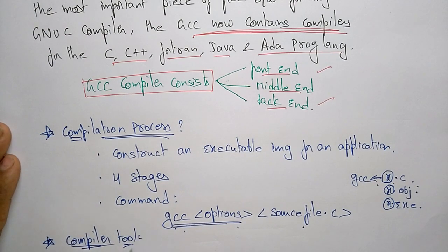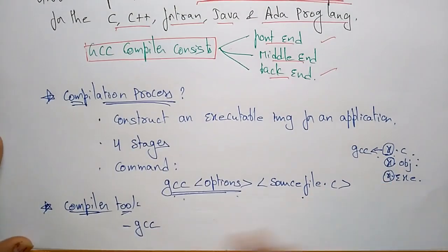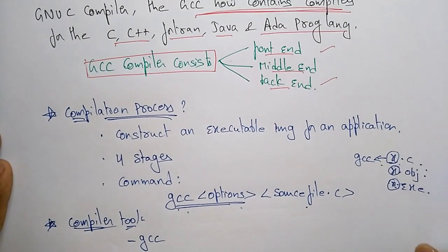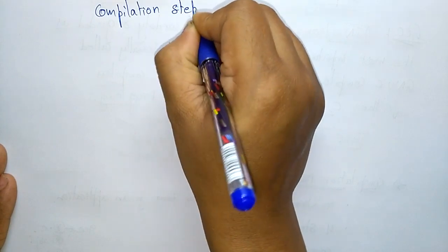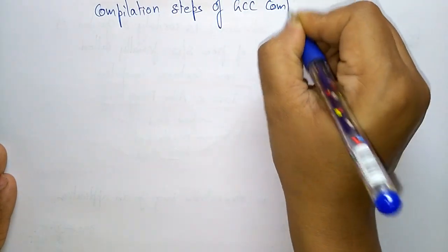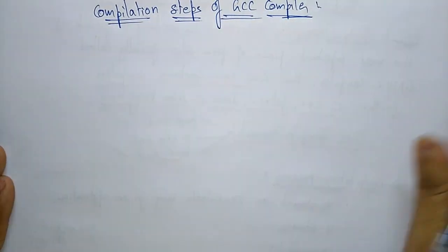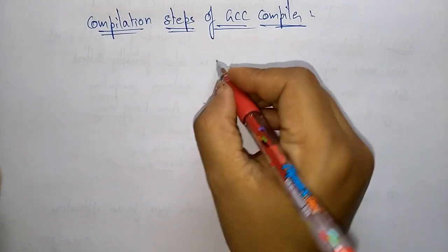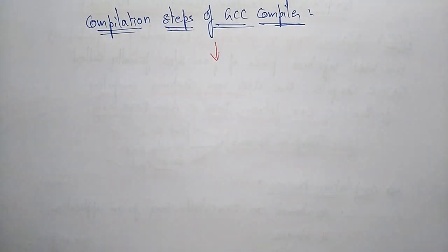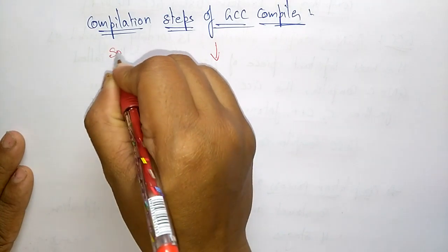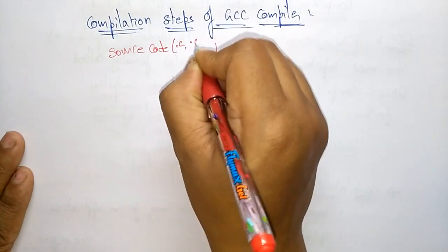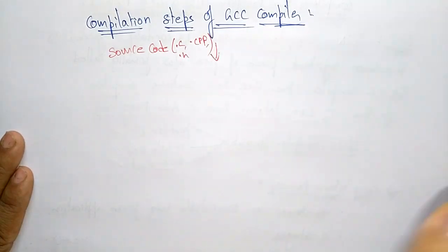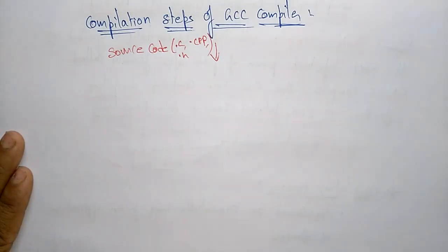The compiler tool is just /GCC, and this is the compiler tool for executing programs. Now let us see the compilation steps of the GCC compiler. First you need a source file — the source file you already written in a text editor. The input to the compiler is always the source file, in the form of .c, .cpp, or .h.